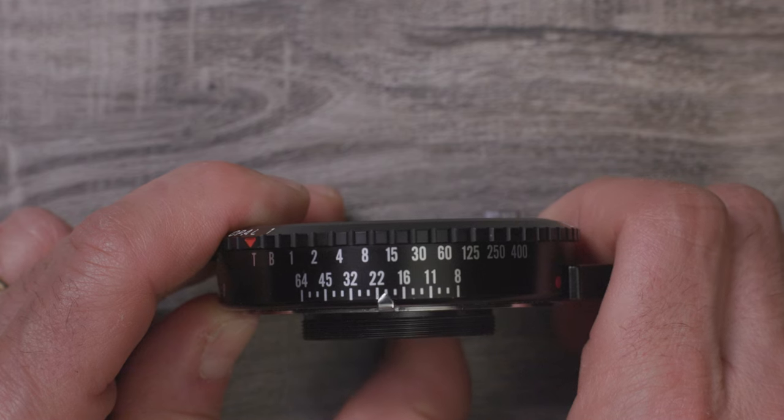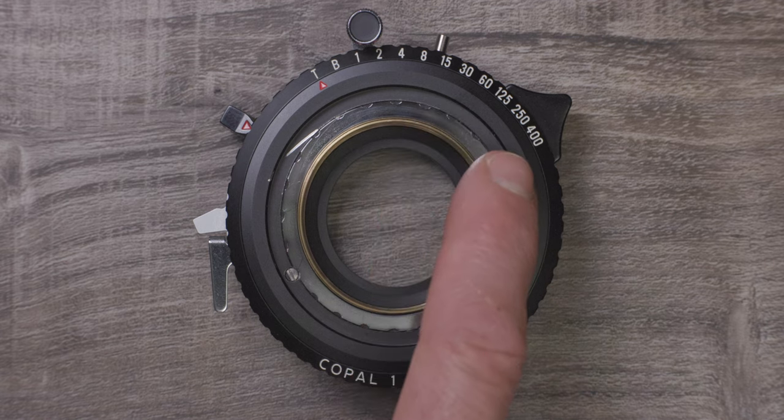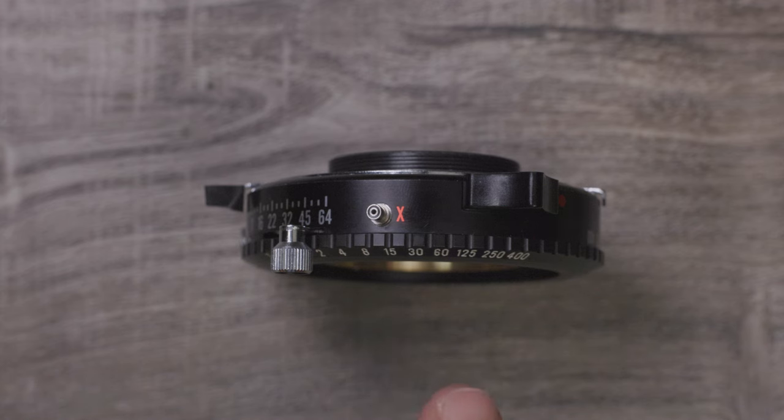The aperture ranges from f8 to f64 and the shutter speeds top out at 1/400th of a second. It also has an x-contact sync socket that allows for connecting the shutter to studio strobes. Since these shutters use leaf style shutters, they are capable of syncing modern studio strobes to all speeds which is also a nice feature. If you want to learn how to connect your studio strobes to your large format lenses, I'll leave a link to my video in the description that explains how to do that.